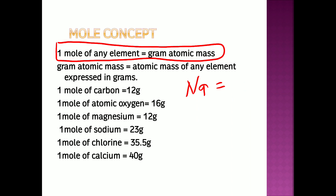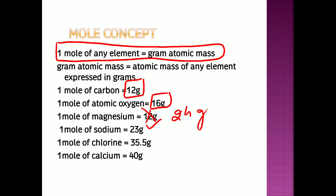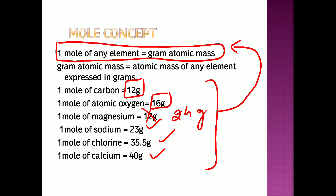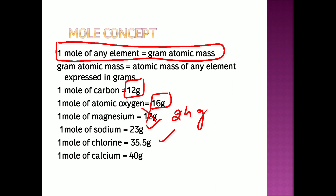So for a few elements: one mole of carbon is 12 grams, one mole of oxygen is 16 grams, one mole of magnesium is 24 grams, one mole of sodium is 23 grams, one mole of chlorine is 35.5 grams, and one mole of calcium is 40 grams. All these masses are gram atomic masses — the same values as on the AMU scale, but expressed in grams. This much quantity of each element equals 1 mole, and all contain 6.022 × 10²³ particles.